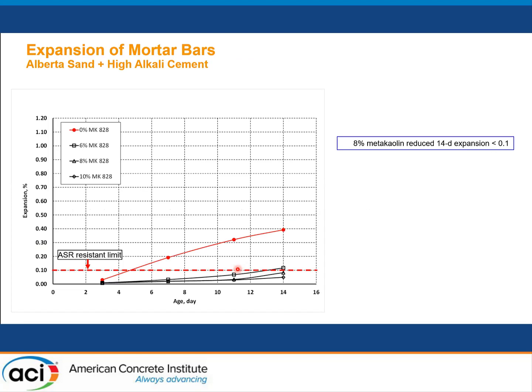This is one example for one of the low-reactivity aggregates. This particular aggregate comes from Abadak, Canada. In this particular study with high alkaline cement, the MetaKaolin level we are using starts from 6% replacement of the total cementitious material. As you can see from the charts, at 14 days, to achieve less than 0.1% expansion, the MetaKaolin level needs to be about 8% by weight of total cementitious material.